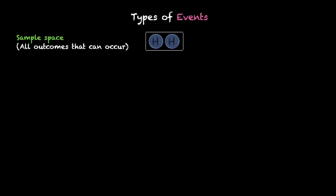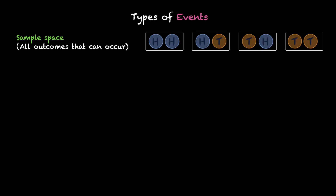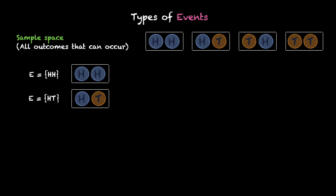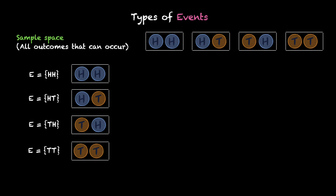Let's look at one more. Again my sample space with these four outcomes. Look at these events: one event is we get two heads, another one is a head and a tail, one more is a tail and a head, and a fourth one is two tails. The technical term here is these are simple events. Why simple? Because they only need one outcome or one sample point from the sample space.